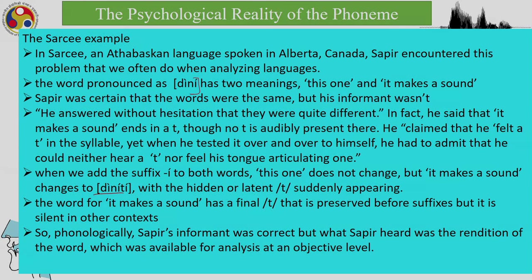The two words 'dini' have different meanings. The T that is not heard — not even produced by the speaker — is actually in the speaker's mental organization. That sound is there even though it is not produced. Phonologically, Sapir's informant was correct; what Sapir heard was also correct, but these represent two different levels: the phonetic level and the phonological level of the mental organization of sounds.